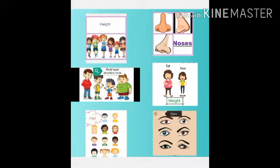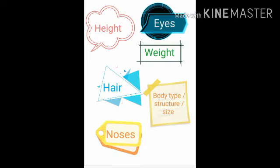Similarities and dissimilarities. The physical similarities and dissimilarities between two people are often observed in several factors such as height, weight, body structure, hair, nose and other features.